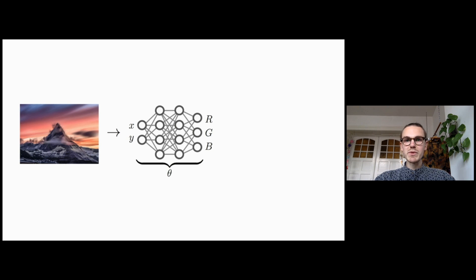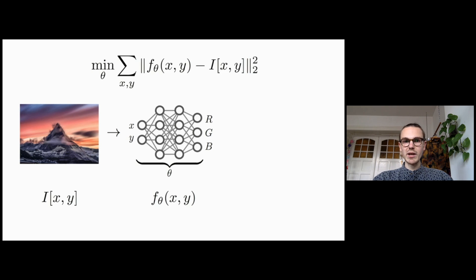In this work, we propose a new simple method for image compression using neural networks. Instead of storing the RGB values for each pixel of an image, we store the weights of a neural network overfitted to the image. The neural network with weights theta maps the pixel locations x, y to RGB values at the corresponding locations on the image.